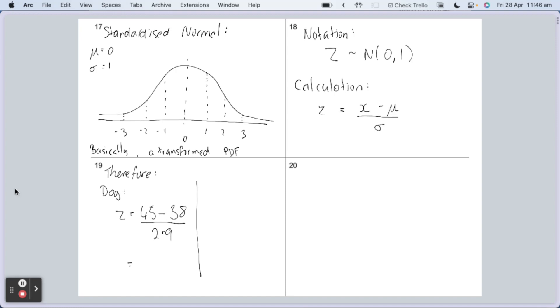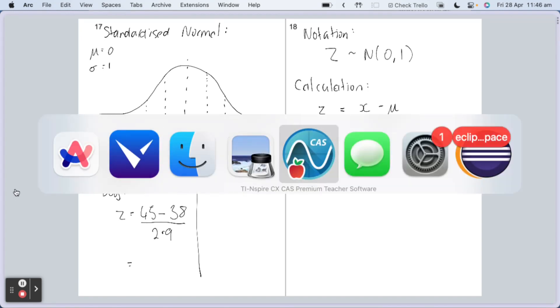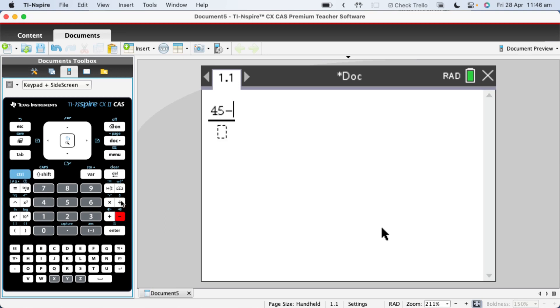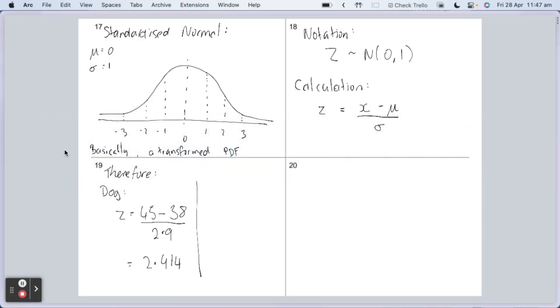So let's see if I can remember. 45 minus 38 over 2.9. So we go to the calculator, and we just go control divided by to get our fraction going here. We go 45 minus 38 on top, and then use my arrow key to go down to the bottom and put 2.9. Press enter, and I get 2.414. I'm just writing that onto my screen. So the relative position for the dog's tail in the standard distribution is 2.414. And we're going to do the same thing for the cat.